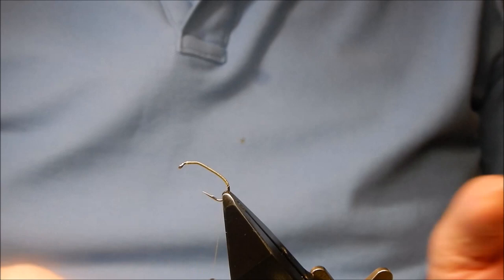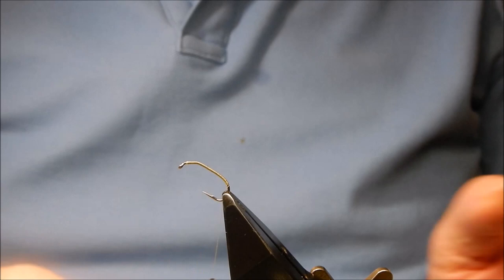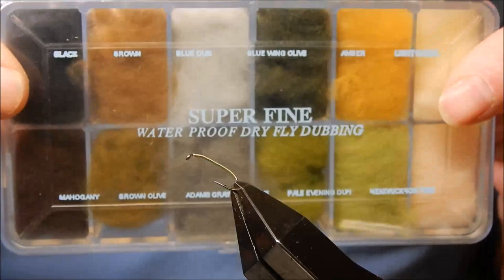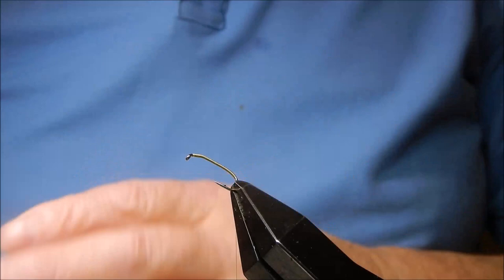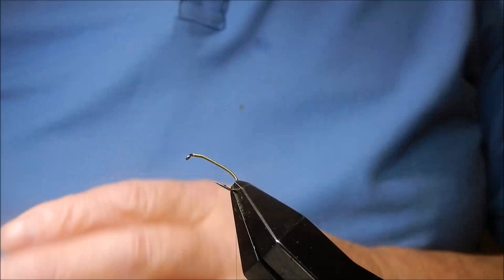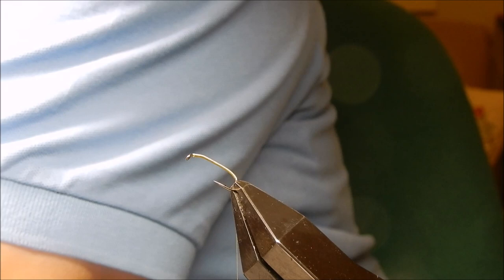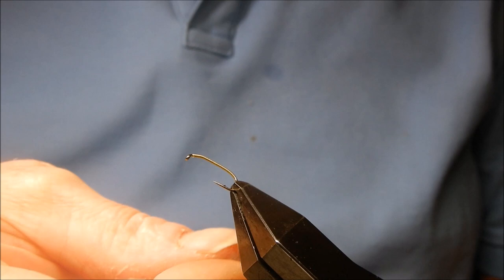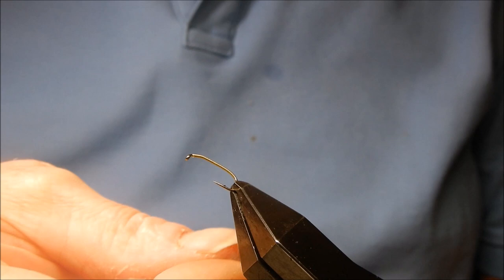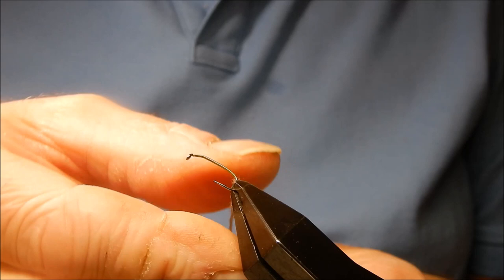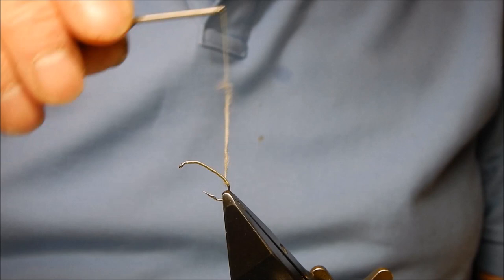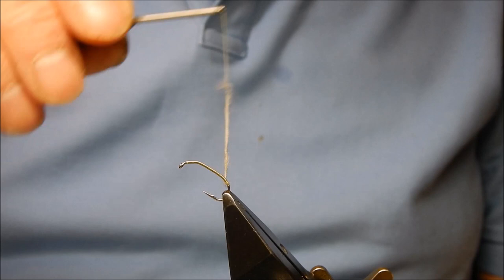All I'm going to do is use a simple dry fly dubbing. You can use any dubbing you like. I think it's Hare's Ear super fine dry fly waterproof dubbing. Use any dubbing, you only need a tiny bit. You can barely see that on my finger. You don't need a lot because you want it to sink. Notice I've just tilted the fly towards me with this vise just to make it easier to dub. That's all you want, you don't want a lot.